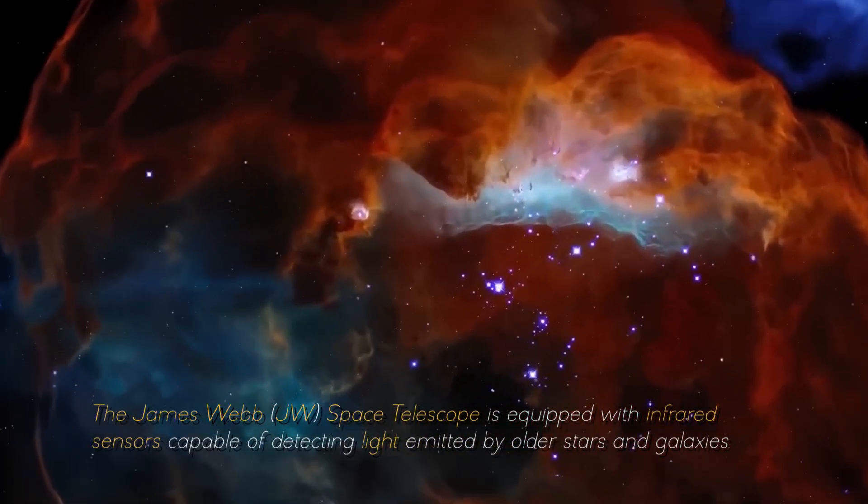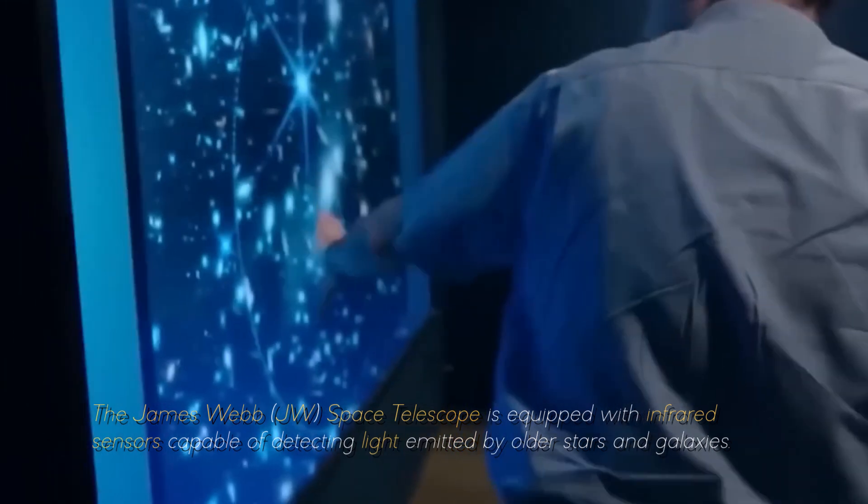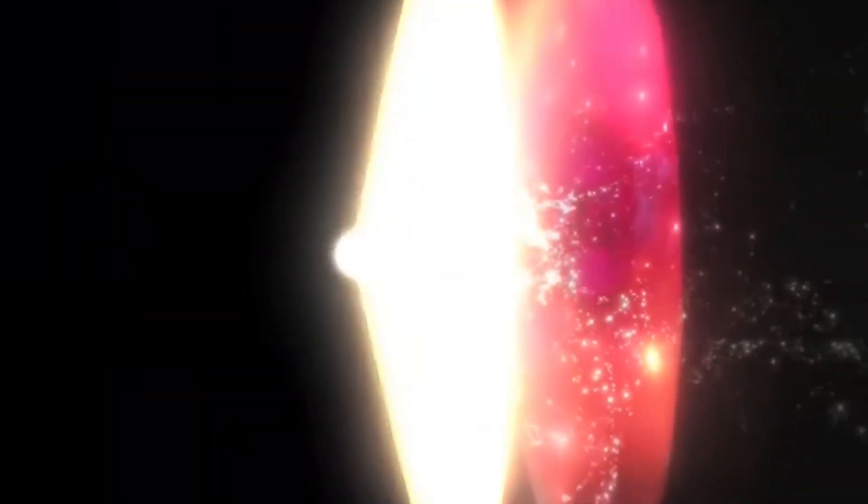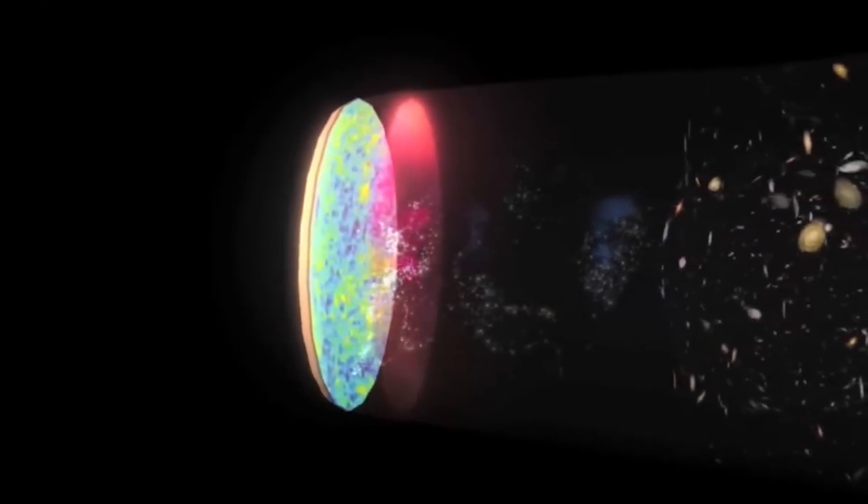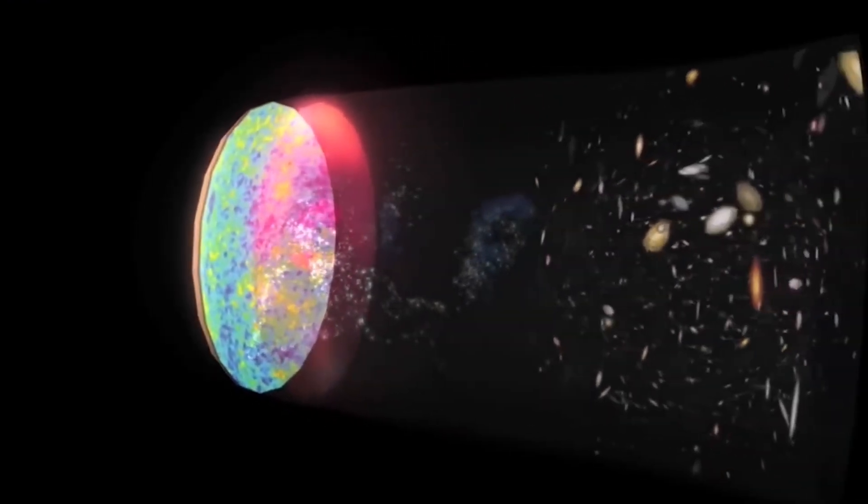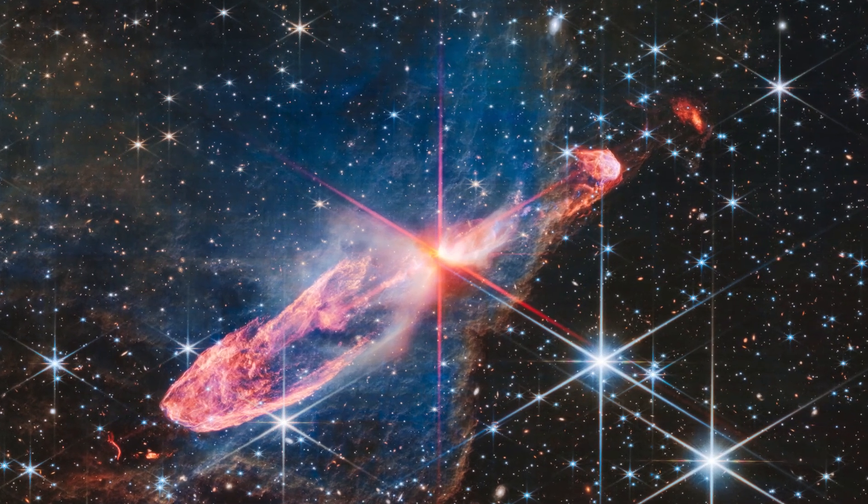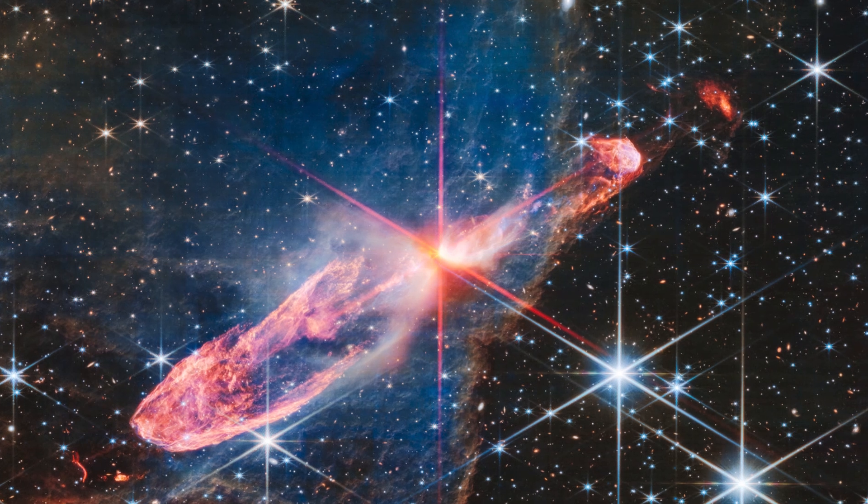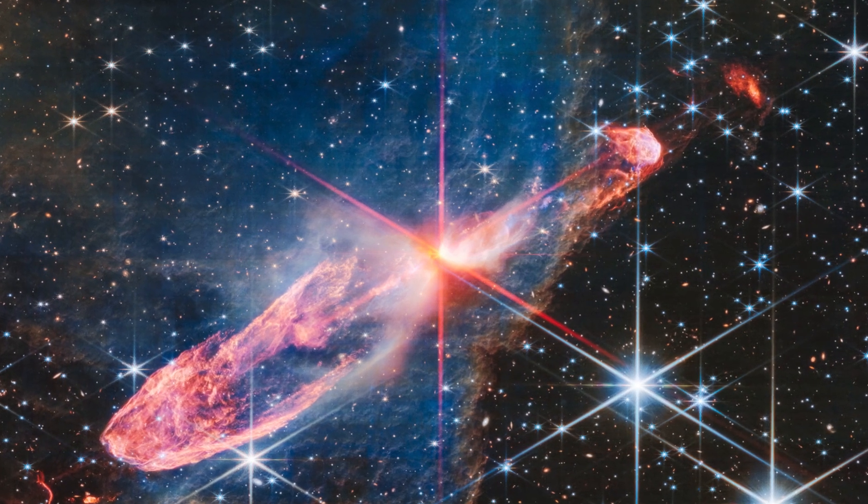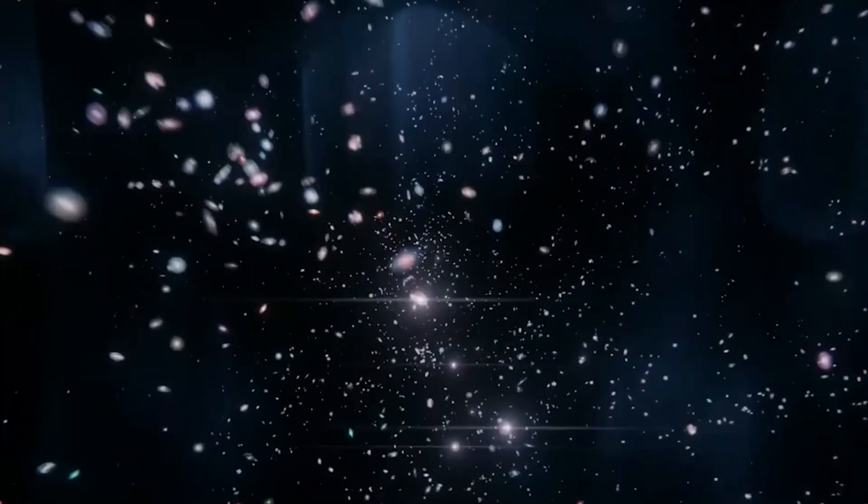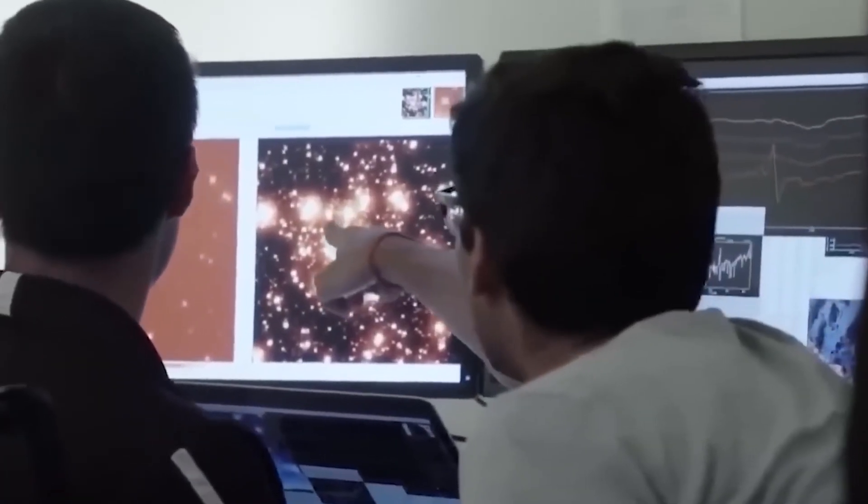The James Webb Space Telescope is equipped with infrared sensors capable of detecting light emitted by older stars and galaxies. This allows astronomers to go back in time, almost 13.5 billion years, to the beginning of the known universe. Prior to this discovery, scientists had detected numerous galaxies in the oldest regions of the universe approximately 350 million years after the Big Bang using data collected by JWST. These distant stellar systems were small and in agreement with the predictions of current cosmological models.